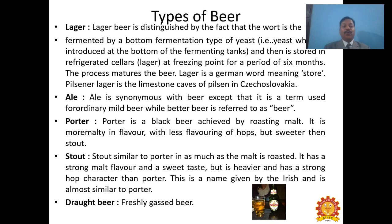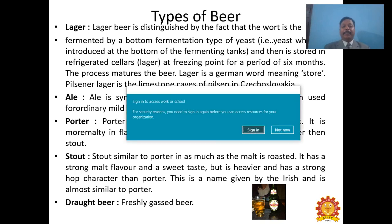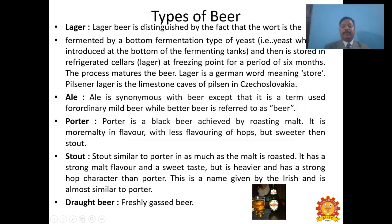Pilsener lager originates from the limestone caves of Pilsen in Czechoslovakia. Ale is synonymous with beer but refers to ordinary mild beer produced by top fermentation. Porter is a black beer achieved by roasting malt — it is more malty in flavor with less hop flavoring, but sweeter than stout. Stout is similar to porter in that malt is roasted; it has a strong malt flavor and sweet taste, but is heavier with a stronger hop character than porter — this name was given by the Irish. Draught beer is a freshly gassed beer.